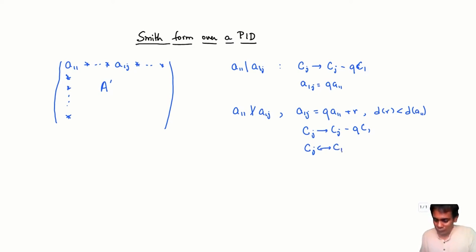So let me show you how to modify these steps when we don't have Euclidean domain and therefore we do not have the Euclidean division algorithm. So if a_11 divides a_1j, then all is well, we can just use this step to clear out a_1j.